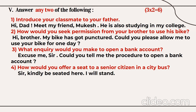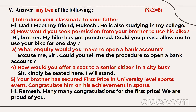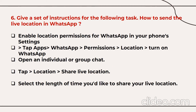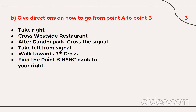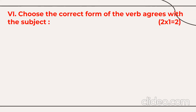To offer a seat to a senior citizen in a city bus: 'Sir, kindly be seated here — I'll stand' or 'If you don't mind, could you please be seated here.' To congratulate a brother who secured first prize in a university-level sports event: 'Hi Ramesh, many congratulations for the first prize — we are proud of you.' For giving instructions on how to send a live location on WhatsApp, use the main verb first in imperative mode: 'Enable location, tap, open, select.' For giving directions, a map will be provided and you must give directions based on it.